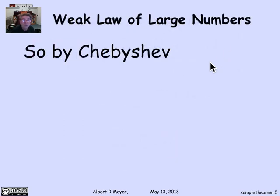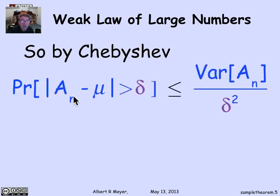Now that lets us apply the Chebyshev bound to the random variable A_n. Because now we know what its mean is, and its mean is independent of n. And then we can apply Chebyshev to the probability that the average of n trials differs from its mean by more than delta. And according to Chebyshev, that's bounded by the variance of the average divided by delta squared.